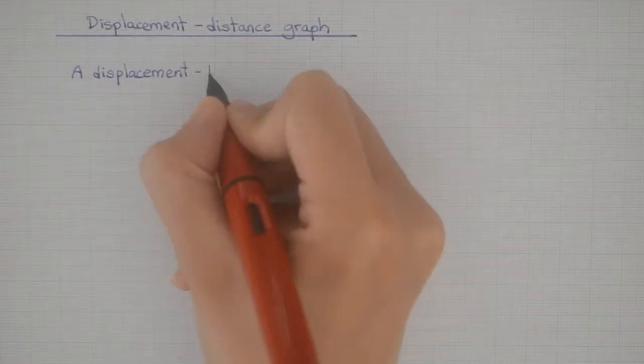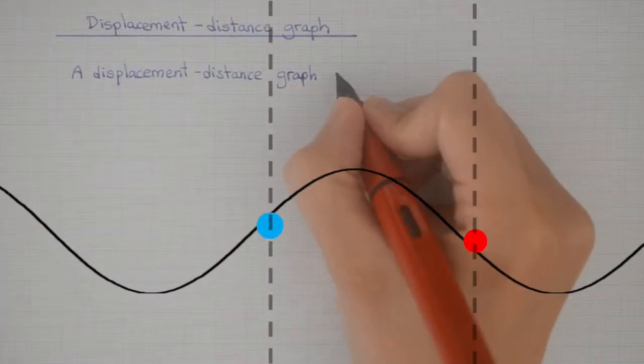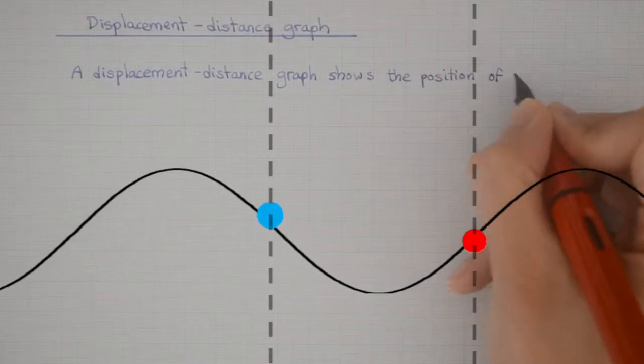Here is a wave traveling towards the right. The envelope is moving to the right. The particles are oscillating vertically.